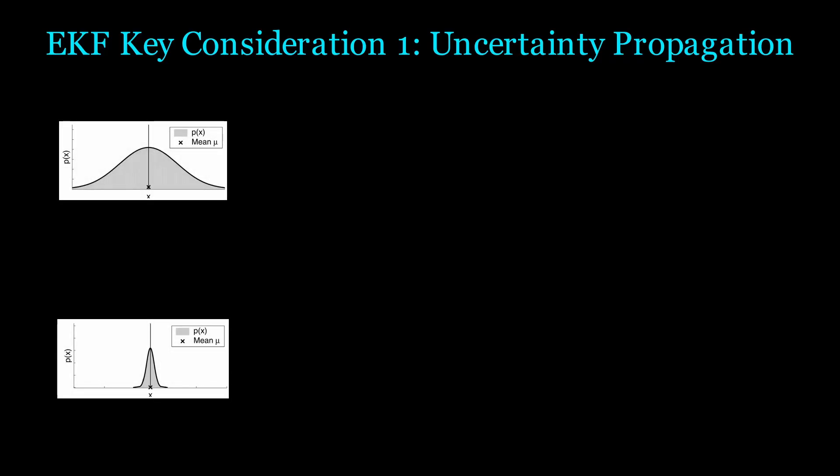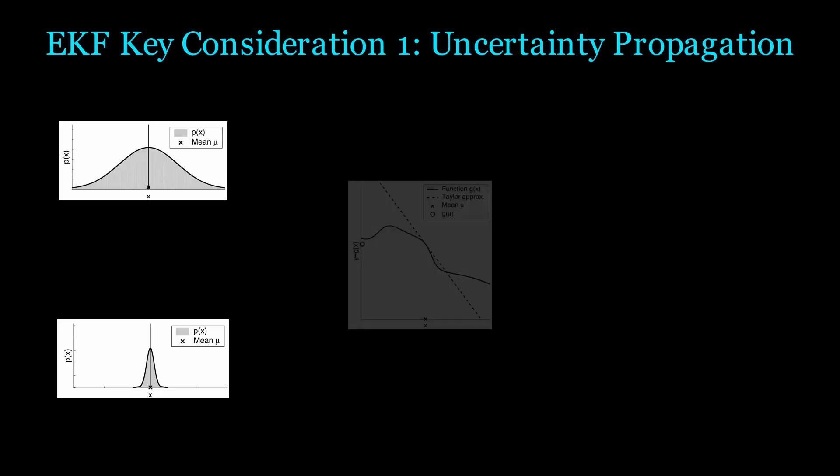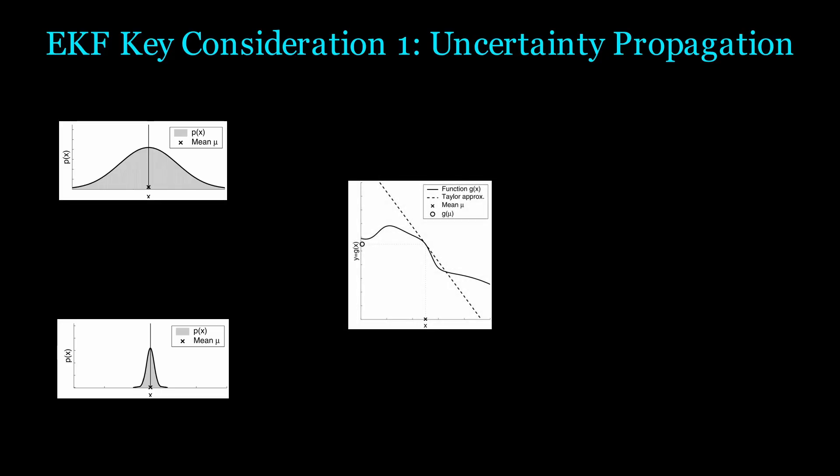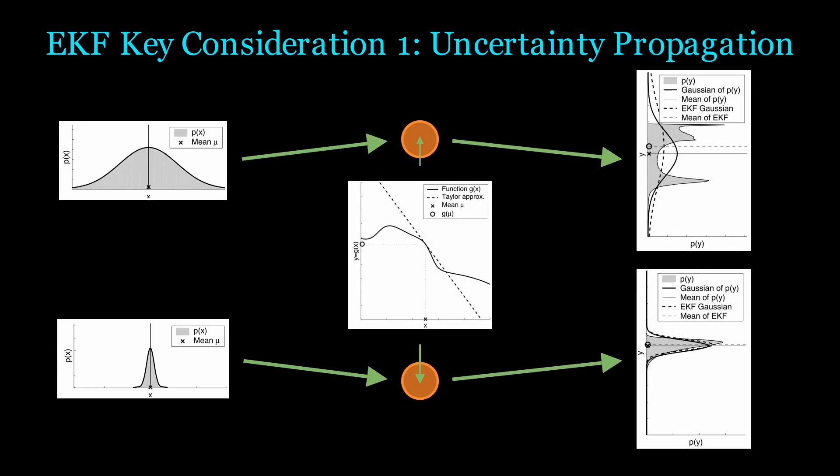First, let's consider two different Gaussian distributions. The top one has a greater variance than the second one. In the middle, we have our function g, which we want to pass our Gaussian distributions through. The right two plots show the resulting distributions. The gray shading in these plots is the true resulting distribution. We obtained this true distribution using Monte Carlo estimation. This means we passed millions of p of x samples into our nonlinear function then we plotted.